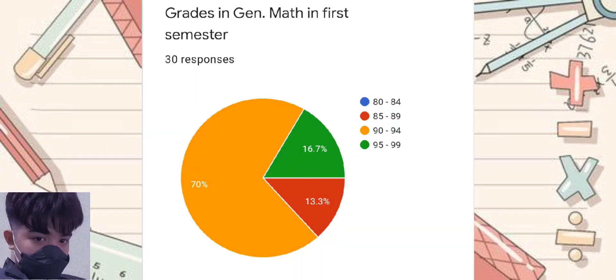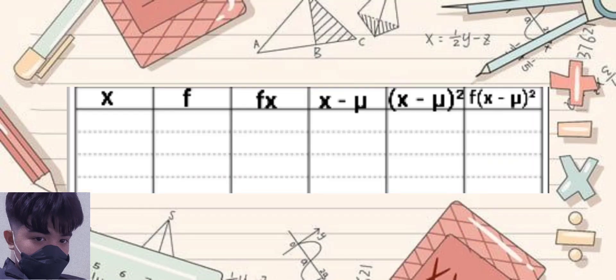With these results, let's now find first the mean and standard deviation. First, we will create six columns. At the first column, we have the X where you can see the mid values of the group data.